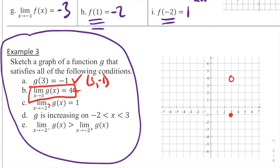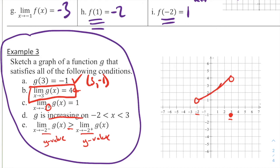We know the limit as x approaches negative 2 from the right side is equal to 1, so at negative 2 this function is going to a value of 1. We also know that g is increasing from negative 2 to 3, so the graph is going upward connecting those two points the entire time. Then we know that the limit from the left of g of x is greater than the limit from the right of g of x at negative 2, meaning the y value coming from the left has to be greater than 1. So we connect that graph, and this would be an example of a piecewise function.